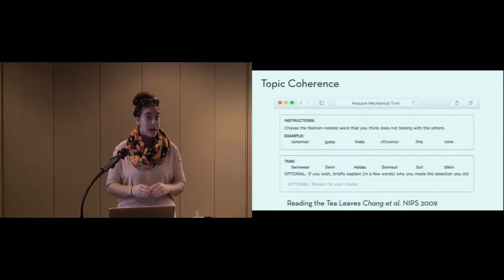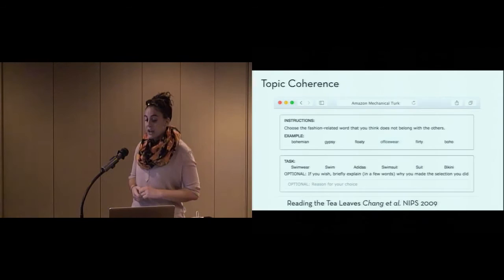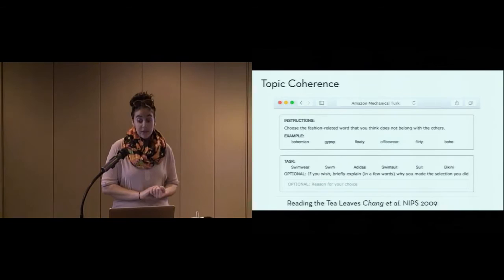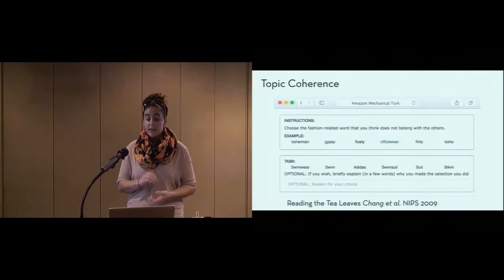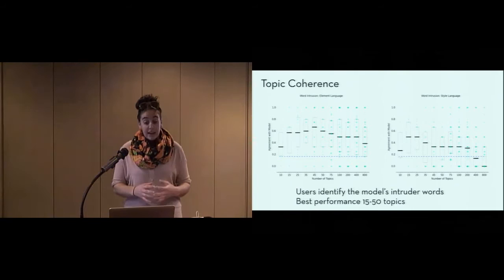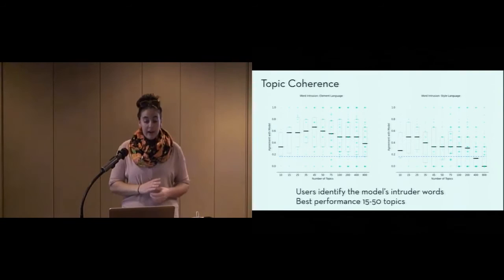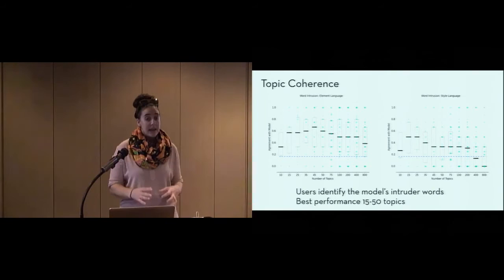Our topic coherence validation task is a method developed by Chang et al. called intruder detection. In this method, we select five highly likely words from a topic and one intruder that's very unlikely in that topic. We ask users to choose the word that does not belong, and if they choose the intruder that's produced by the model, it indicates that the topics are tight and coherent. We crowdsource this task on Amazon Mechanical Turk and find that users do typically agree with the model, far above the baseline of random selection, which is shown by the blue dotted line here. We find that users find the topics most coherent between 15 and 50 topics, so we bound our second translation validation task to that range.